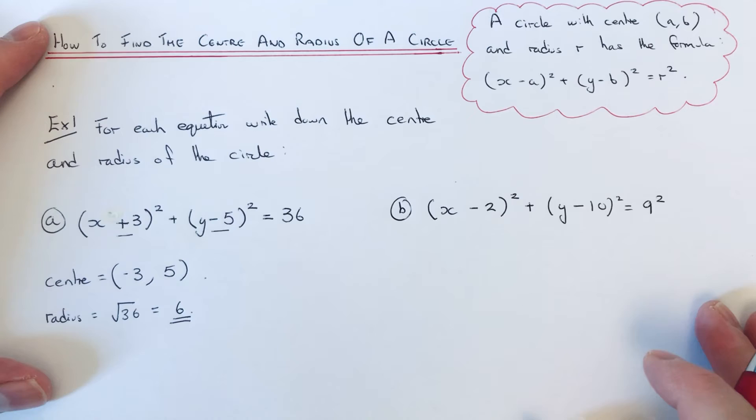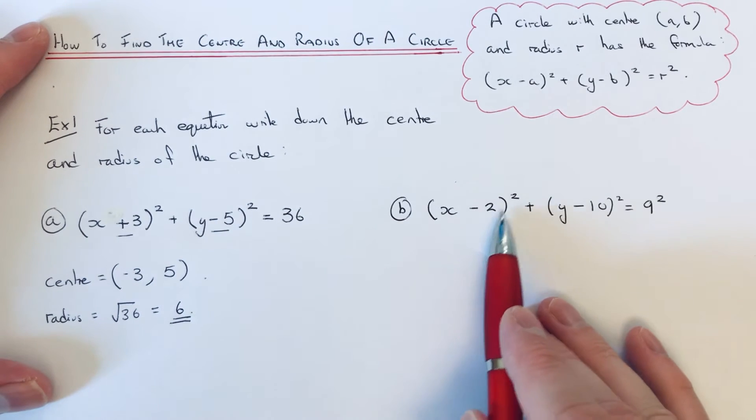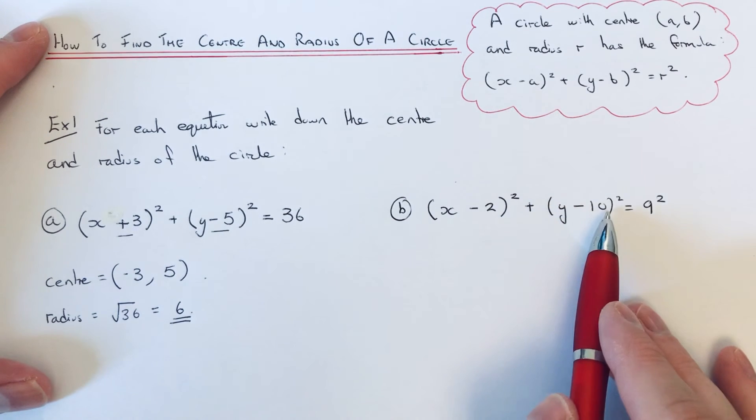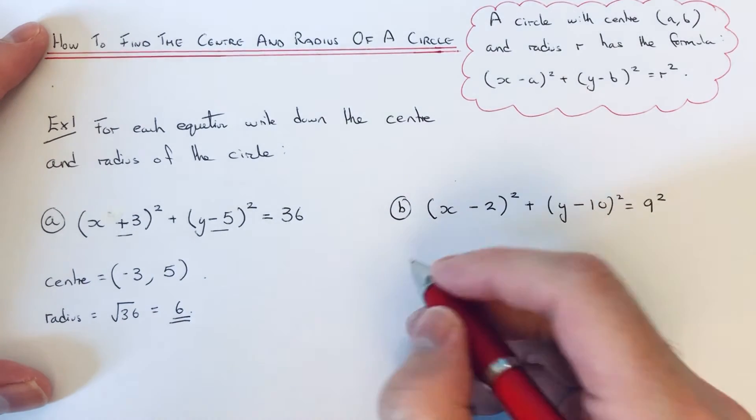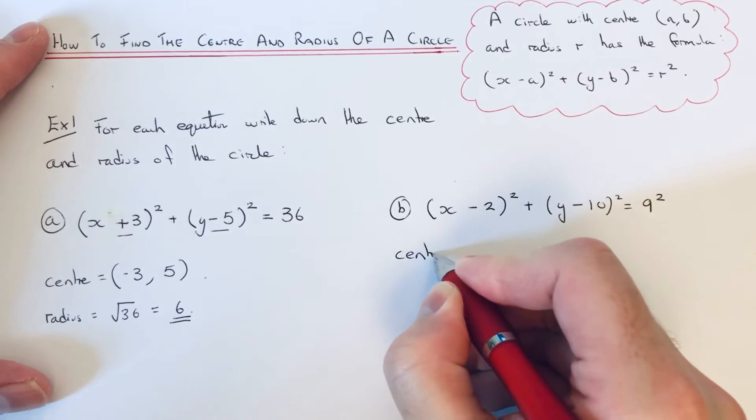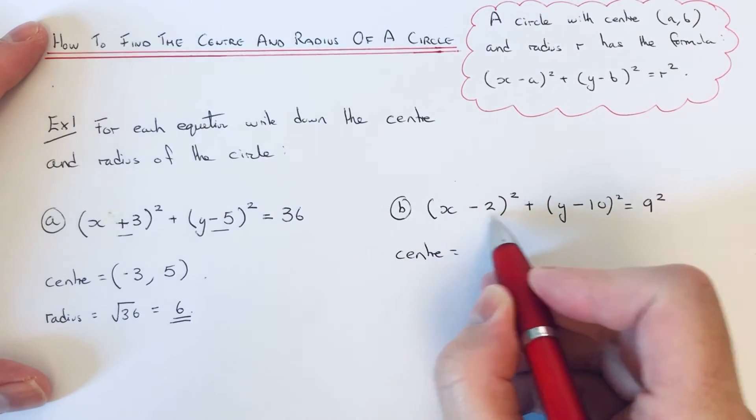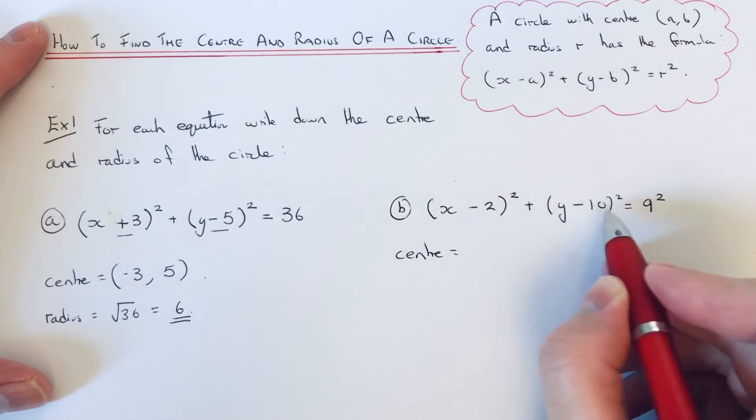So let's move on to the second example. So this time we've got x minus 2 squared plus y minus 10 squared equals 9 squared. So again, to get our centre of the circle, we just need to change the sign of the two numbers inside the bracket.